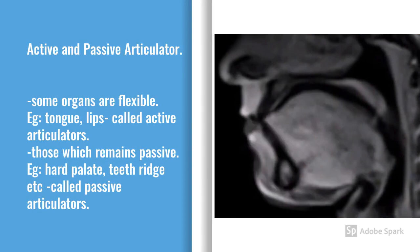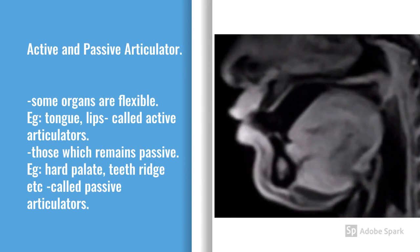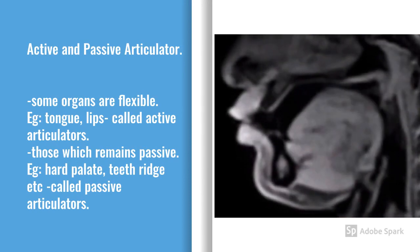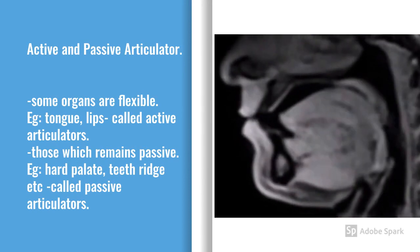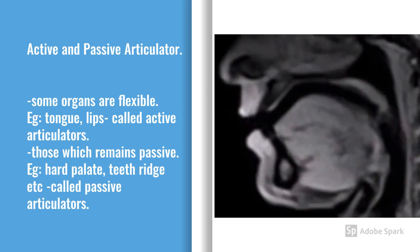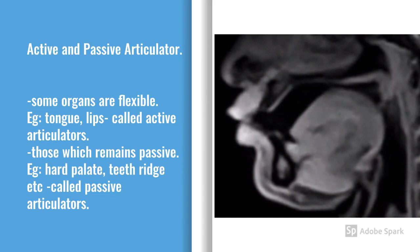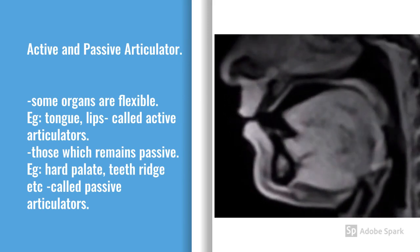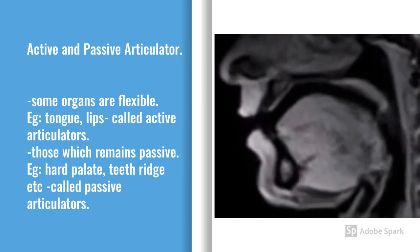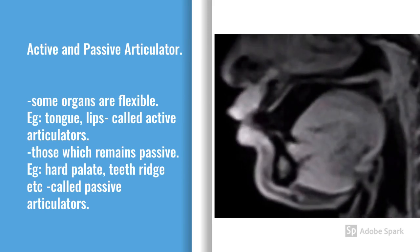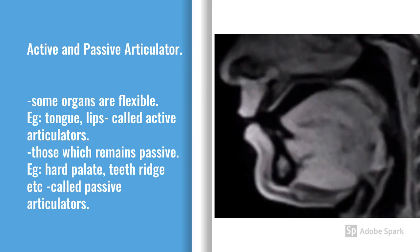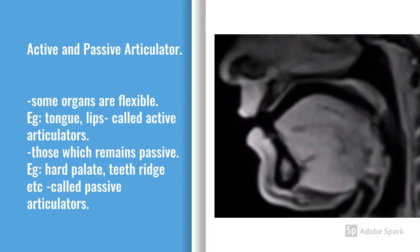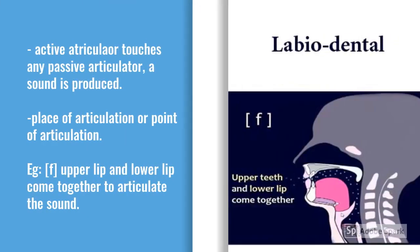Active and passive articulators. In the articulation of speech sounds, some organs are flexible — they are called active articulators. Those which remain passive are called passive articulators.